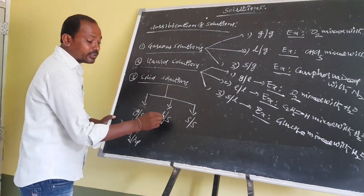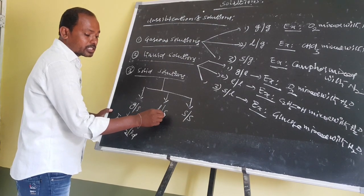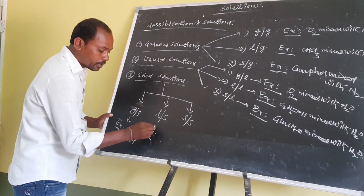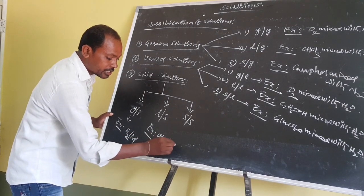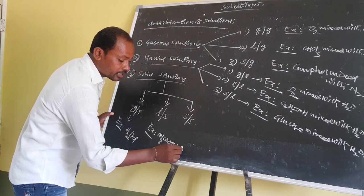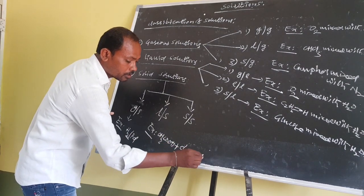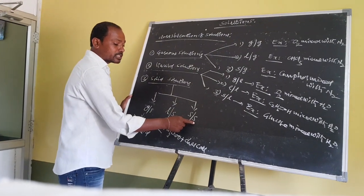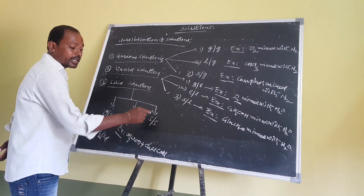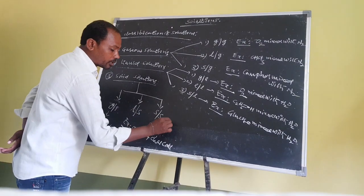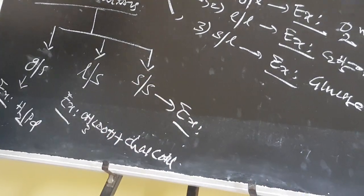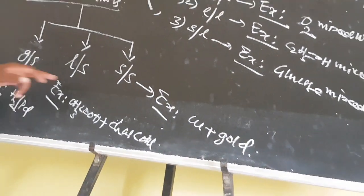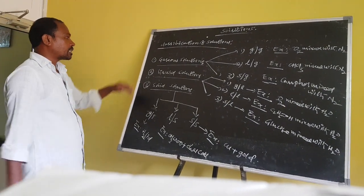In liquid-in-solid type solutions, solid acts as solvent and liquid acts as solute. Example: acetic acid mixed with a solid. In solid-in-solid type solutions, solid acts as solvent and another solid acts as solute. Example: alloys — copper mixed with gold. This is the best example for solid-in-solid type solutions. These are about the classification of solutions.